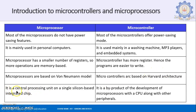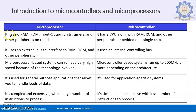A microprocessor is a central processing unit on a single silicon-based integrated chip. A microcontroller, on the other hand, is the byproduct of the development combining the CPU along with other peripherals — so in the single chip you will have the silicon-based processor along with memory, IO devices, and timers all together. A microprocessor has no RAM, no ROM, no input-output units, timers, or other peripherals inside the chip. Whereas a microcontroller has a CPU, RAM, ROM, and other peripherals all embedded onto a single chip, as we saw in the diagram.